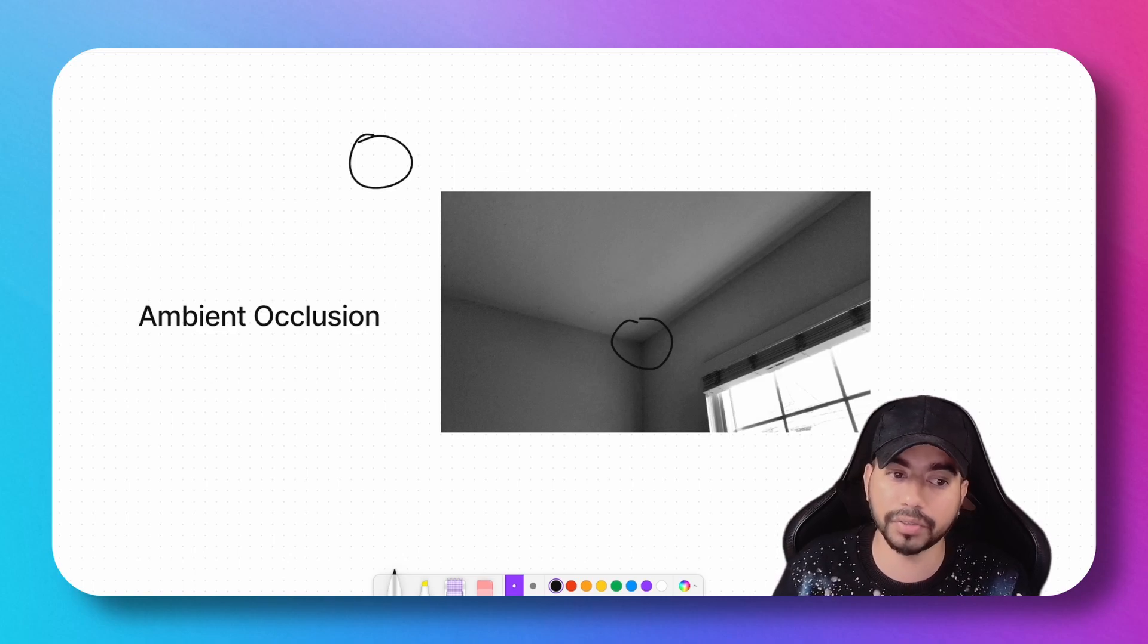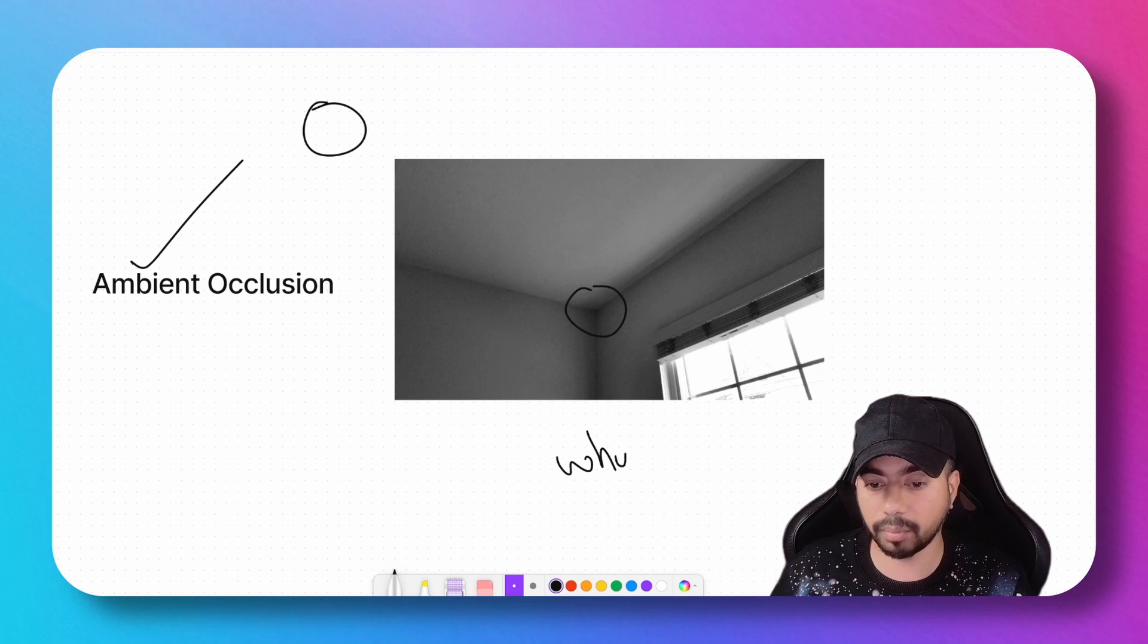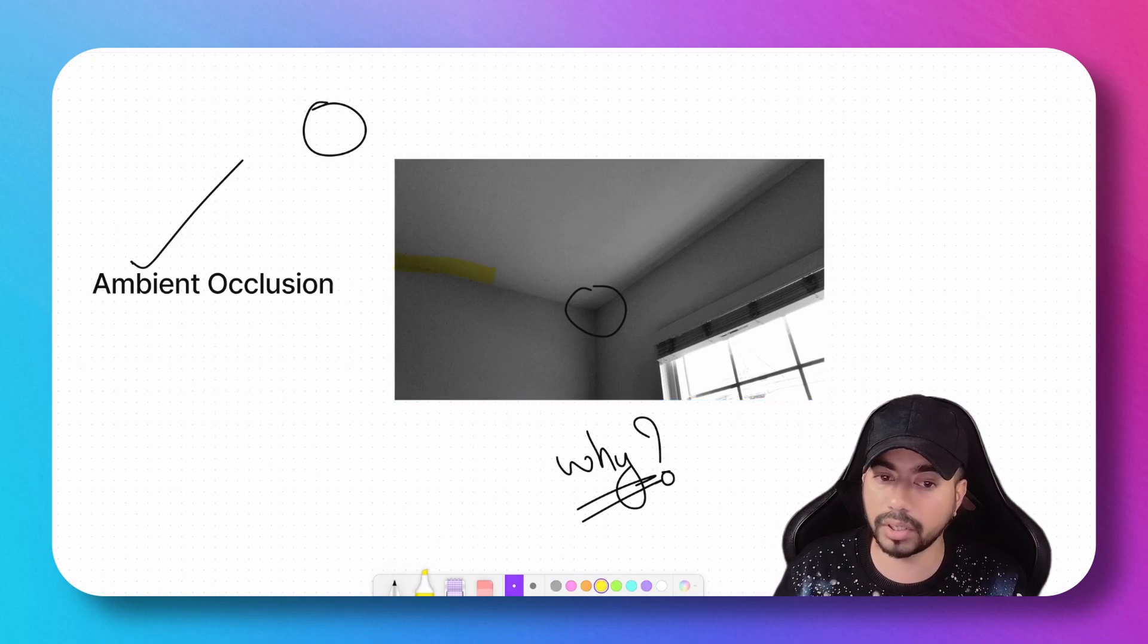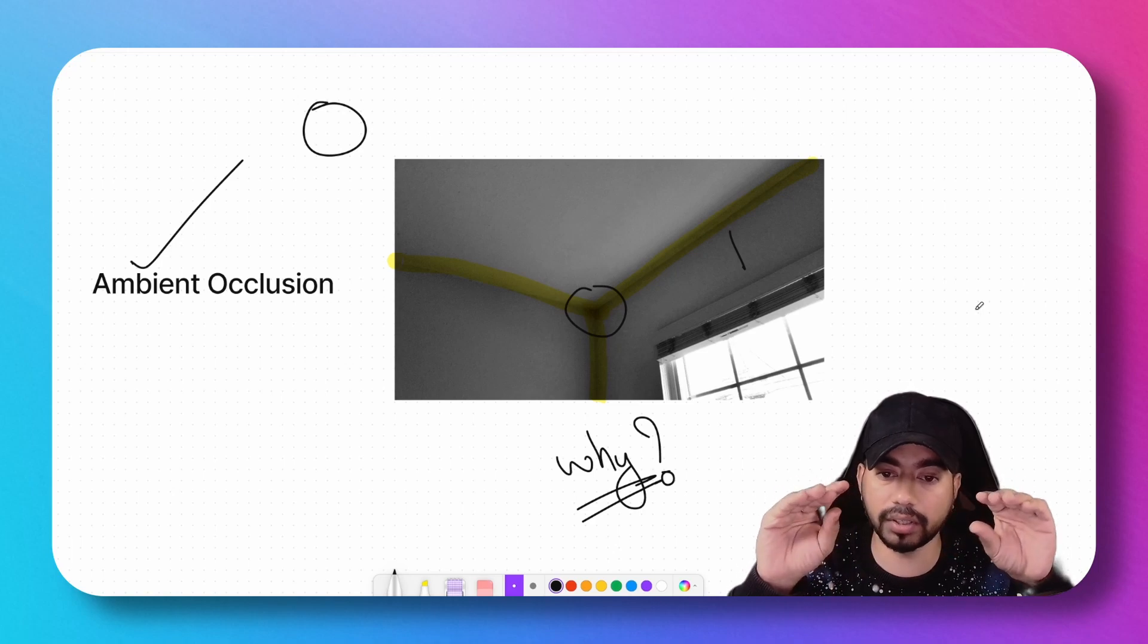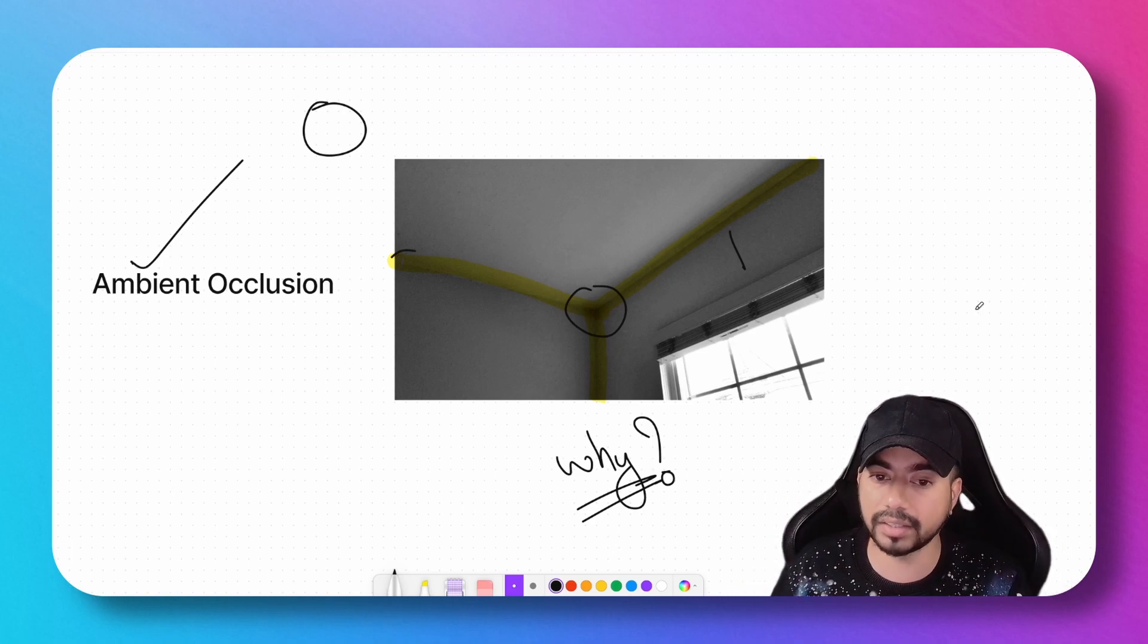...to replicate this effect in computer graphics, we have something called ambient occlusion. Now why does this take place? Why do the corners and edges look darker than the rest of the scene? This is majorly because the amount of light that falls on these areas is less—the light rays are obstructed by the walls and ceiling. The light that reaches these areas is less compared to the rest of the flat wall.